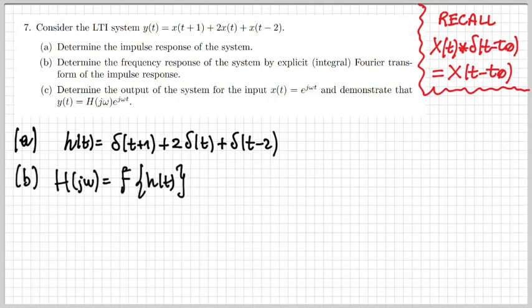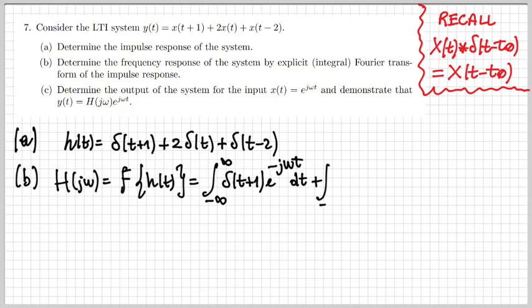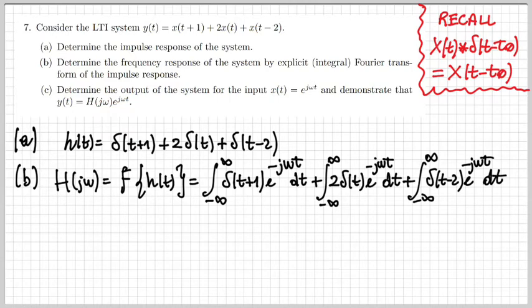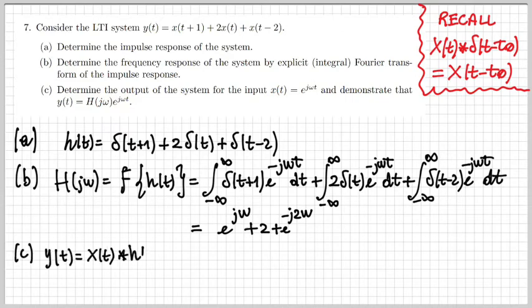Part b of the exercise is about the frequency response of the system by calculating the Fourier transform of the impulse response. Now that we have h(t), we calculate the Fourier transform. This is easy because of the superposition property — we can calculate the three different Fourier transforms for the three impulses that constitute the impulse response and then sum the results. We get e^{jω} + 2 + e^{-j2ω}.